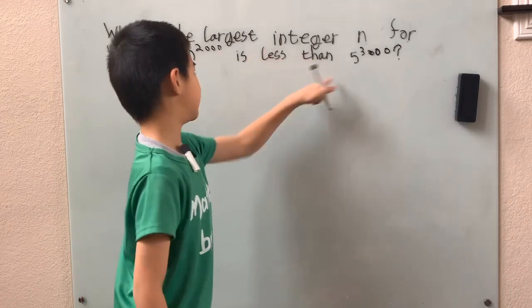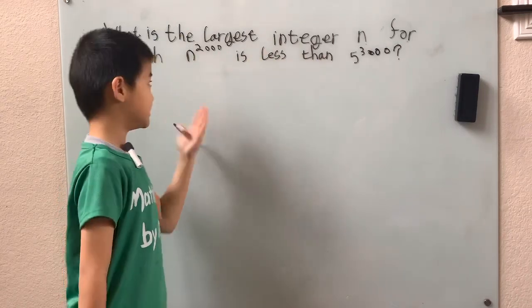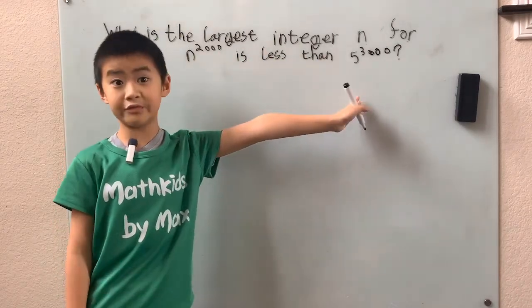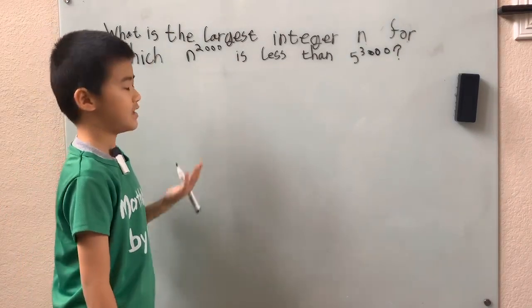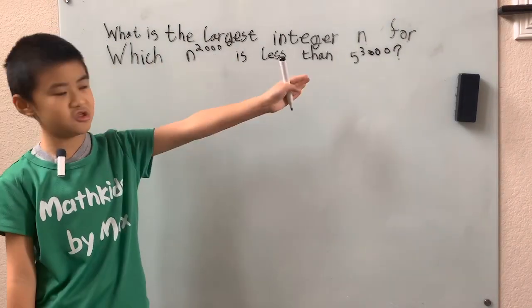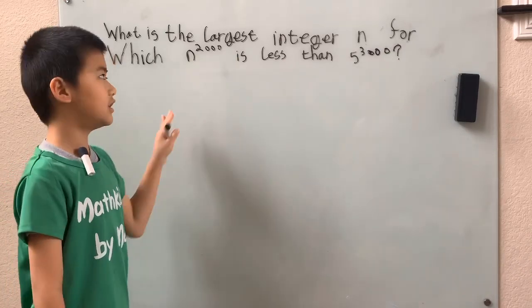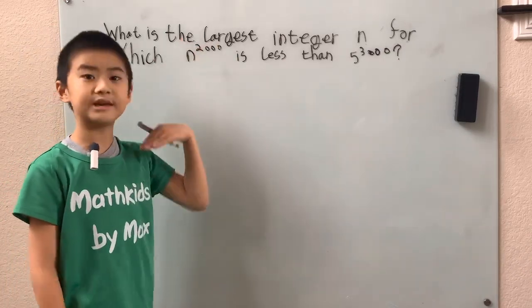You have to get the bases the same, or you might say n has to equal 5, the bases are the same, or the exponents are the same. And it doesn't work to say that because 2,000 is not equal to 3,000. So we have to get the exponents the same.